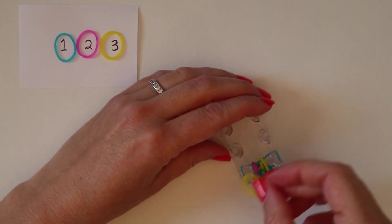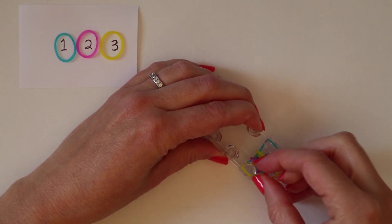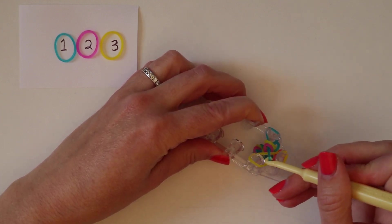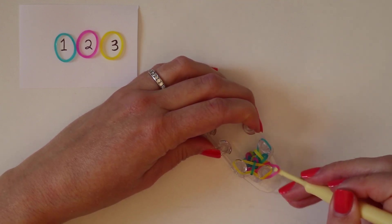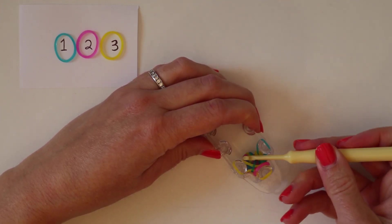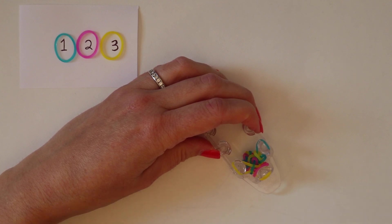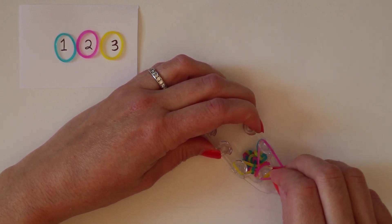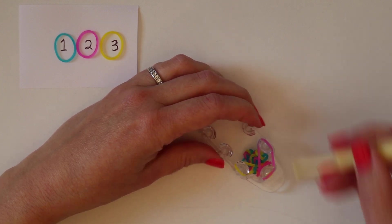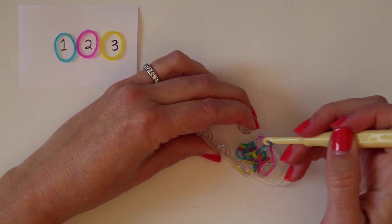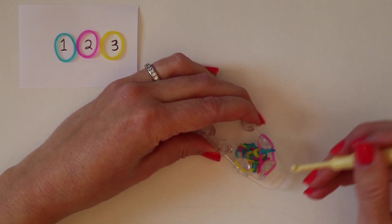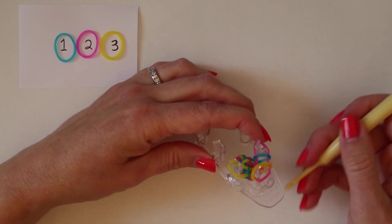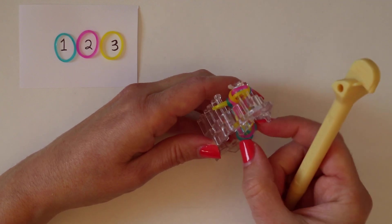So, color three is going on the left. Up and over, up and over, and then color two goes on the right side. Up and over, up and over. Up and over with color one, and your pattern will start forming.